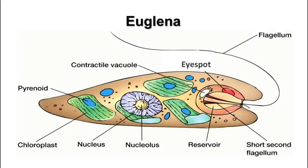Next, we have a euglena. There's an eye spot in euglena — it is not an eye, it detects light. The eye spot allows it to detect the presence of light and move into the light because it has chloroplasts. In the diagram, the chloroplasts look kind of like little football helmets, and the chloroplasts undergo photosynthesis.